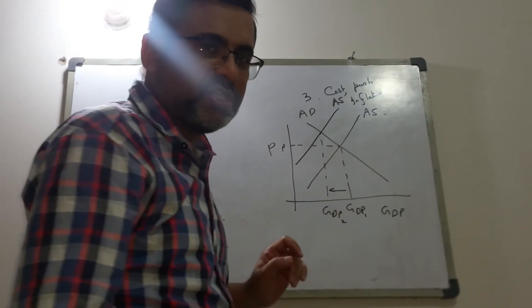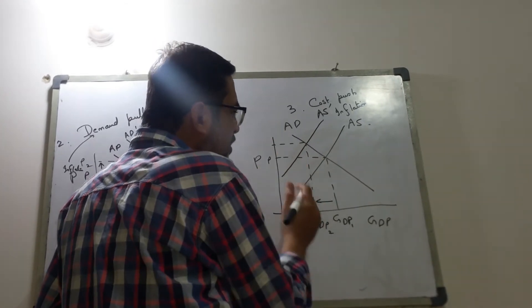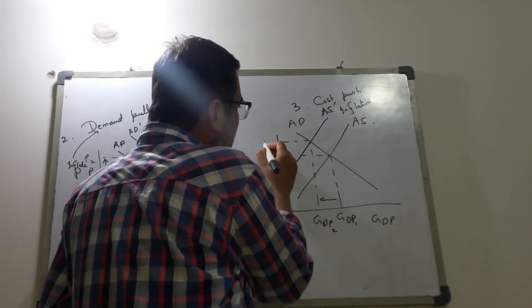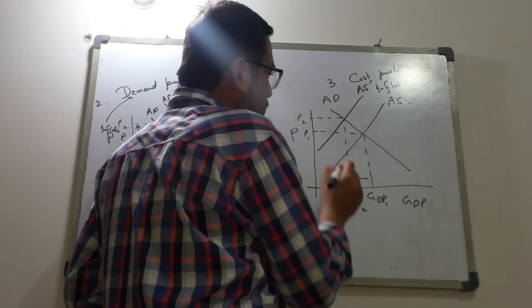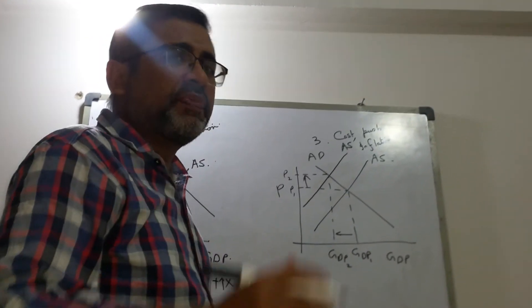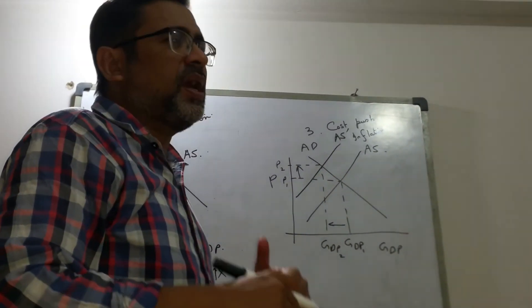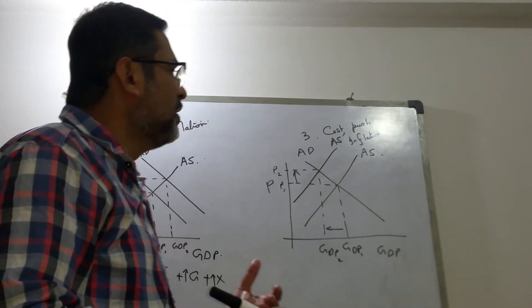The GDP is reduced and because of the reduction in GDP and the reduction in supply, prices move from P1 to P2. So what happens? Inflation takes place, supply is reduced, and the economy goes down in a downward spiral.